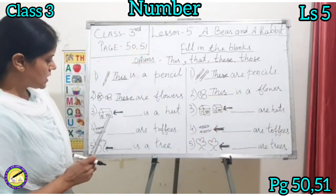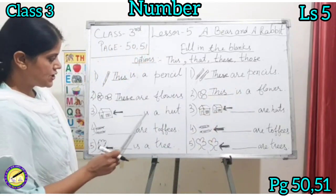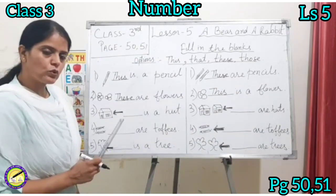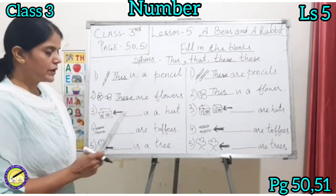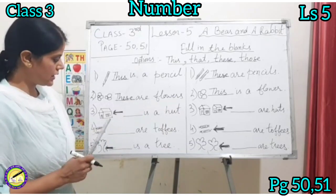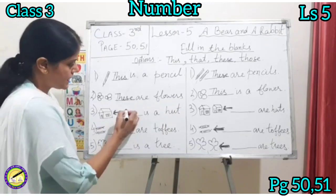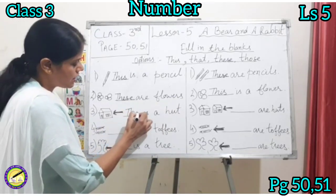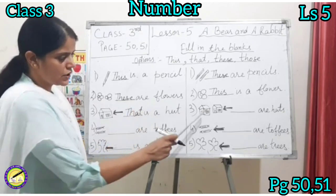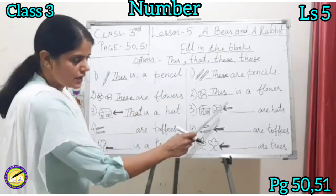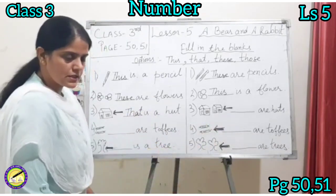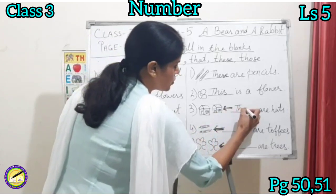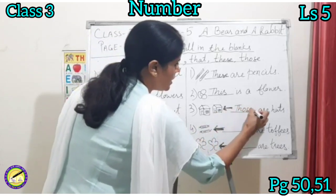The third is: dash is a flower. And the fourth is about a hut — that is a hut. For two huts, dash are huts — those are hearts. Those are hearts.